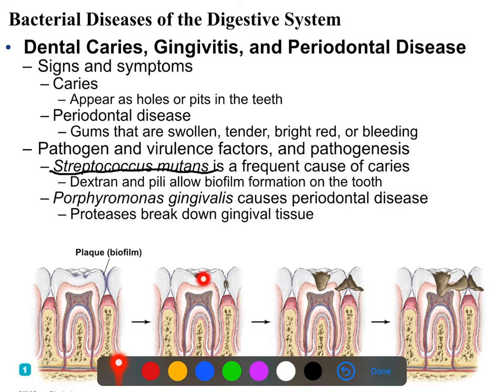Caries can happen on the top from bacteria that get caught in small creases in your teeth, or in between where your teeth touch together. It largely happens in areas where bacteria can get stuck inside, and that's because Strep mutans ranges from being microaerophilic to being anaerobic - it doesn't like oxygen. It generally likes to live in areas with less oxygen where they can form plaques, which are calcified biofilms. They start off as a biofilm and then grow a hard shell on it.